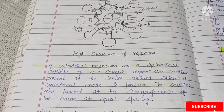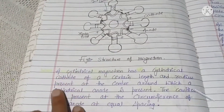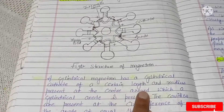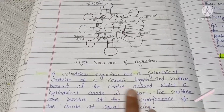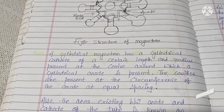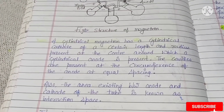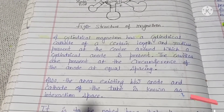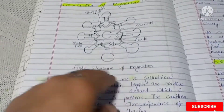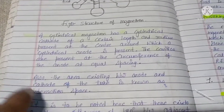A cylindrical magnetron has a cylindrical cathode of a certain length and radius present at the center, around which a cylindrical anode is present. The cavities are present at the circumference of the anode at equal spacing. The area existing between the anode and cathode of the tube is known as the interaction space.